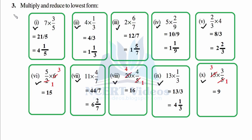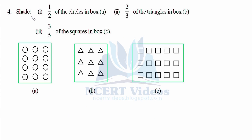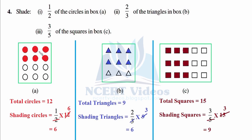Question number four: shade first half of the circles in box A, then two by three of the triangles in box B, and three by five of the squares in box C. For box A, the total number of circles is twelve. Remember: 'of' means multiplication in mathematics. So one over two times twelve — cutting: one to two, six to twelve — shade six circles.